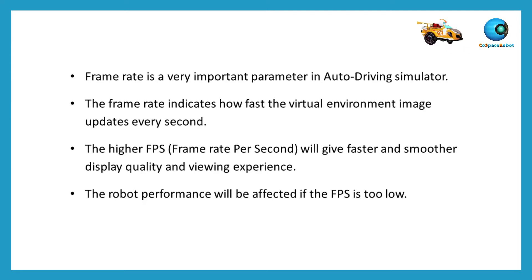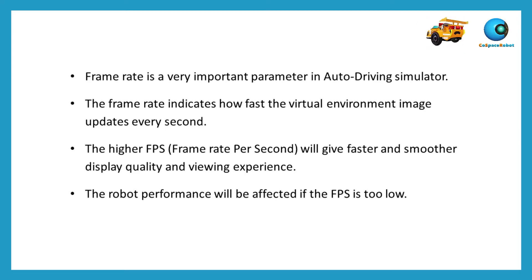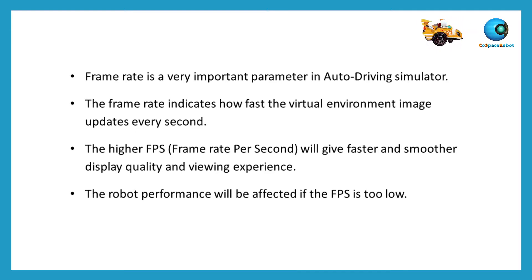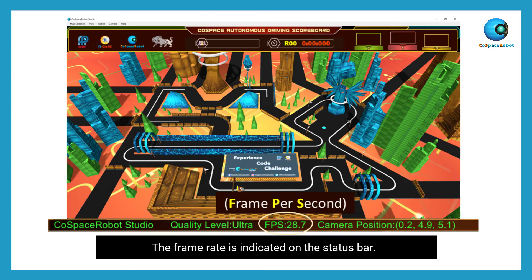Frame rate is a very important parameter in the Auto Driving Simulator. It indicates how fast the virtual environment image updates every second. A higher frame rate per second gives faster and smoother display quality and viewing experience. The robot performance will be affected if the FPS is too low. The frame rate is indicated on the status bar, and it is highly recommended to keep the frame rate greater than 15.